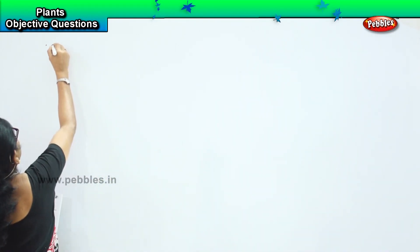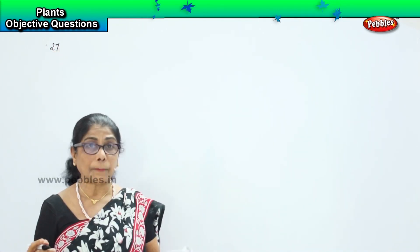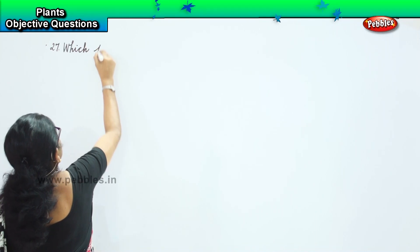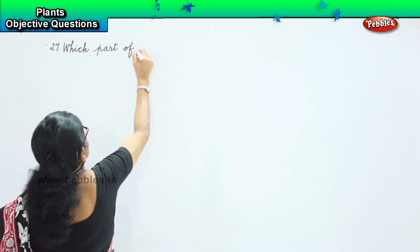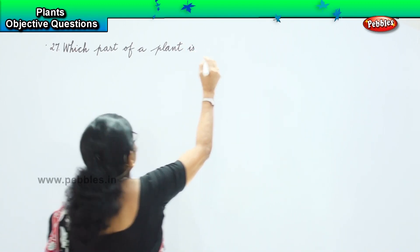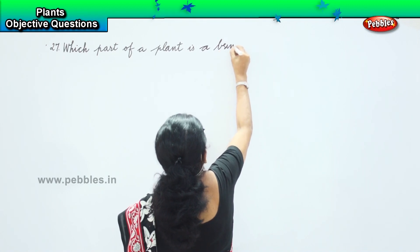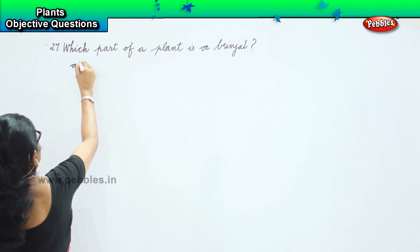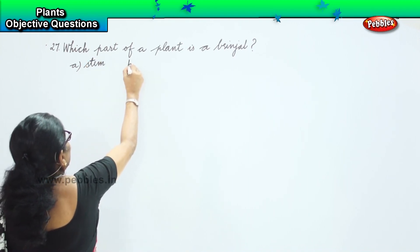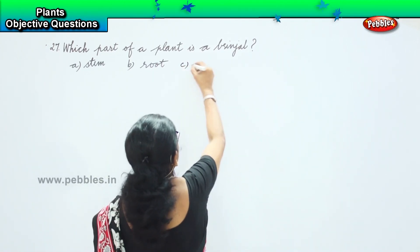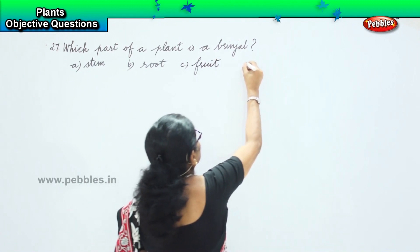Let us look at our 27th question. Which part of a plant is a brinjal? The options are: A, stem; B, root; C, fruit; D, flower. Let us choose.